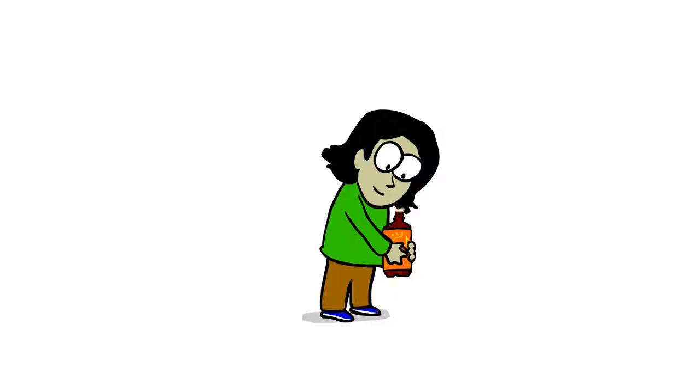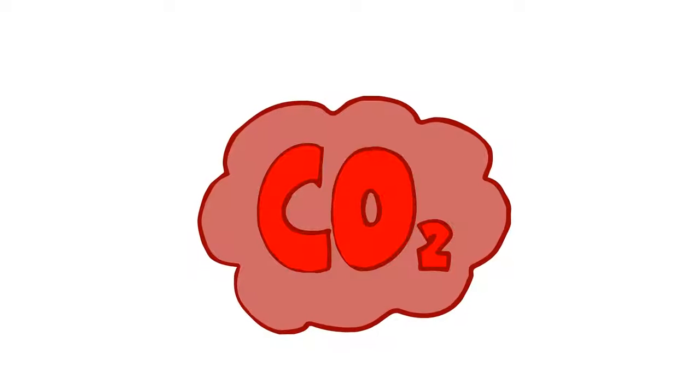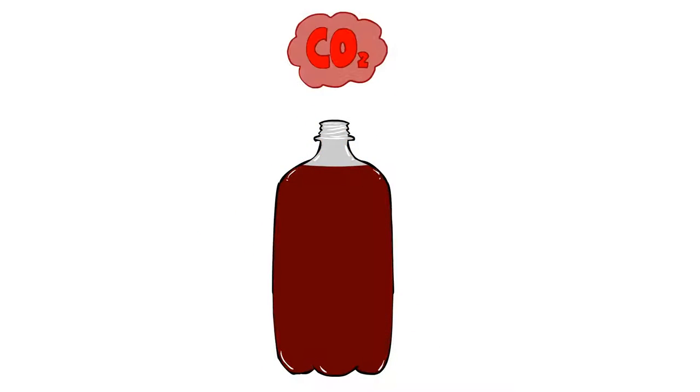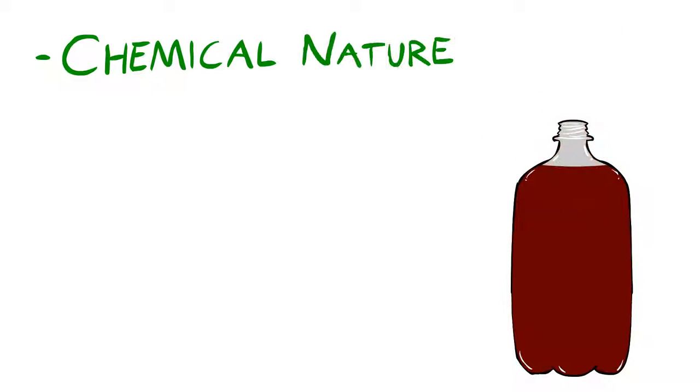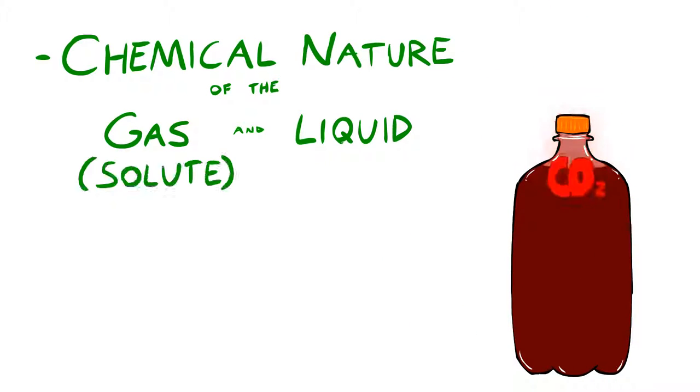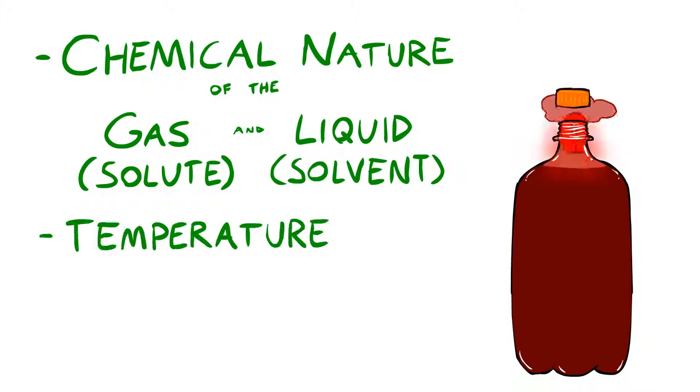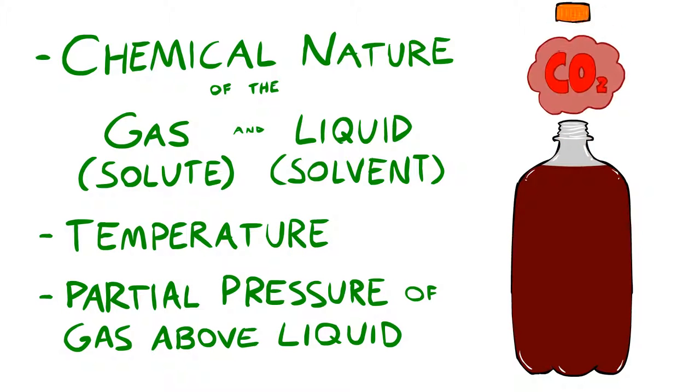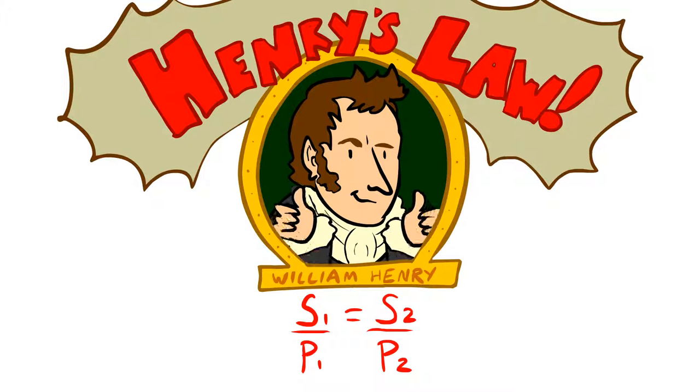Ever wonder where these bubbles come from? They come from carbon dioxide gas that has been dissolved under pressure in the liquid. Gases can dissolve in liquid and are dependent on the chemical nature of the gas and liquid, or solute and solvent, temperature, and the partial pressure of the gas above the liquid. The scientific law that explains this is Henry's law.